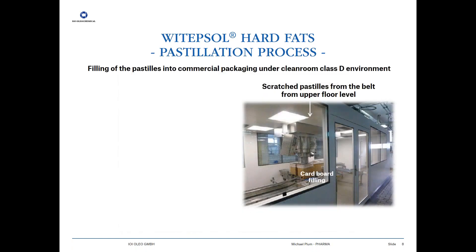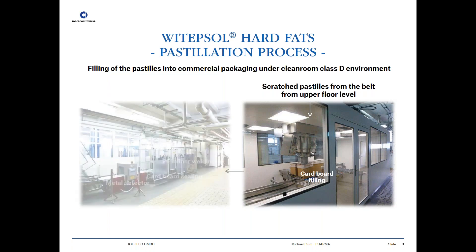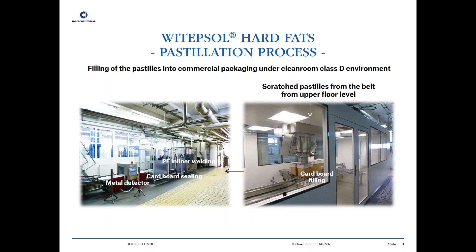One level down there is the filling area, which is a laminar flow system with a balance system where cardboards are filled with the pastilles. The normal packaging weight is 20 kg, and within the cardboard there is a PE inner liner. The PE inner liner is then welded, and the cardboard is completely sealed with a specific tape to avoid insects entering the packaging material. The last step is a metal detector to detect any possible small metal pieces.